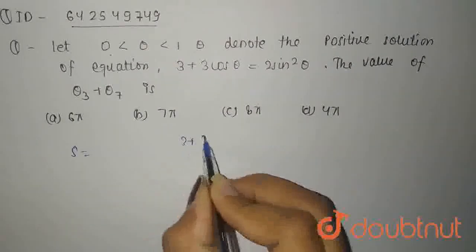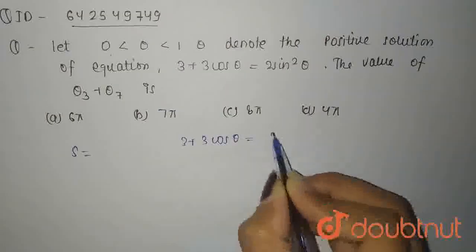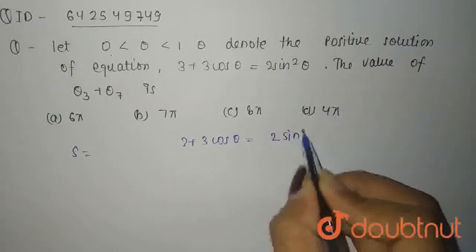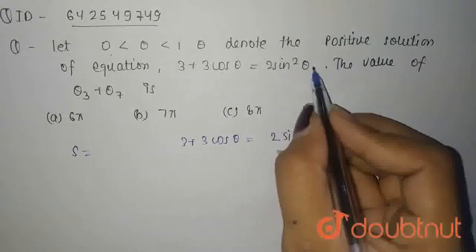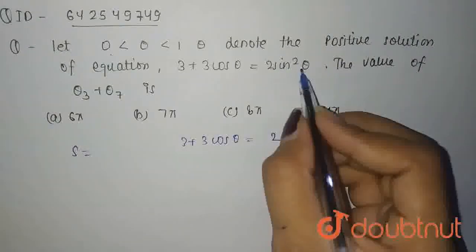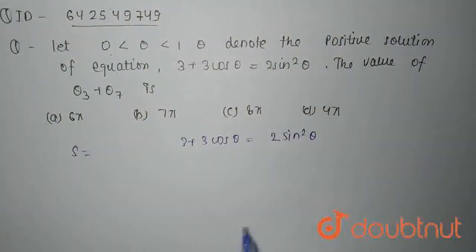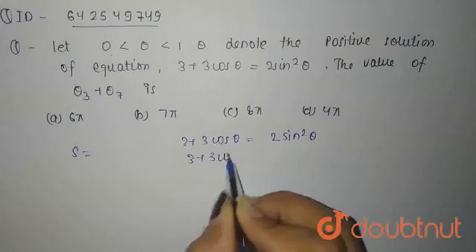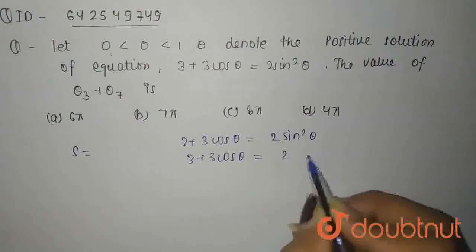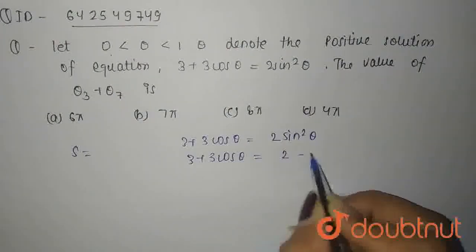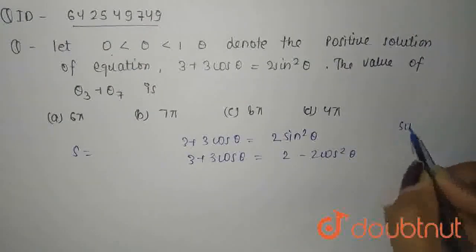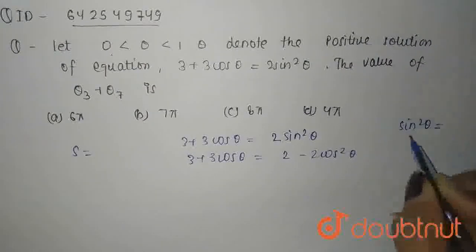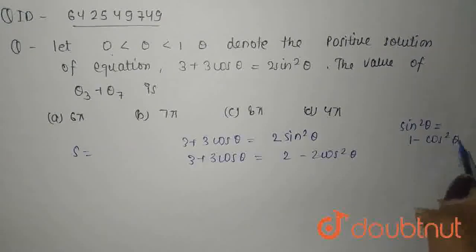The given equation is 3 plus 3 cos theta equals 2 sin squared theta. You can write sin squared theta as 1 minus cos squared theta. So, 3 plus 3 cos theta becomes 2 minus 2 cos squared theta.